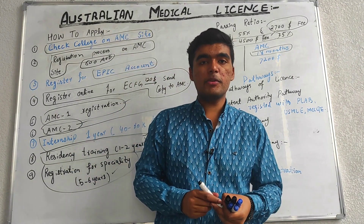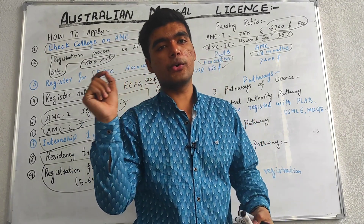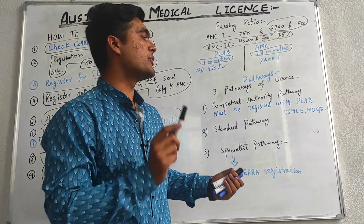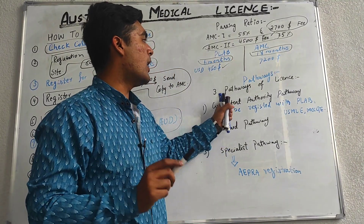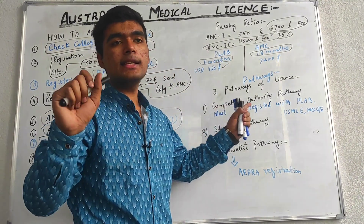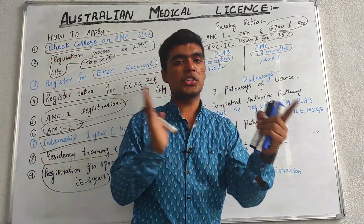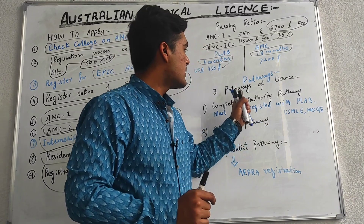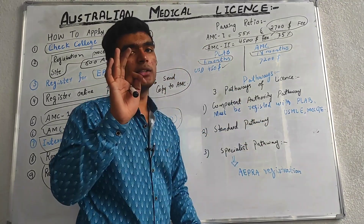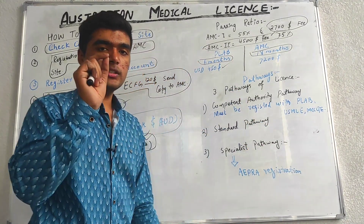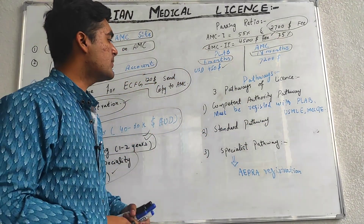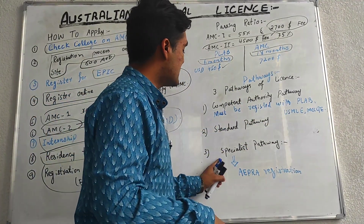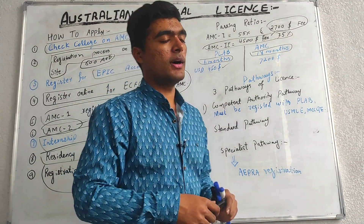PLAP is also valid for Australia. When talking about pathways, there are three pathways to easily get an Australian medical license. The first is the Competent Pathway, the second is the Standard Pathway, and the third is the Specialist Pathway.